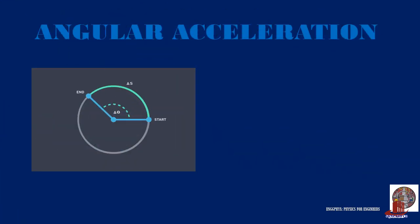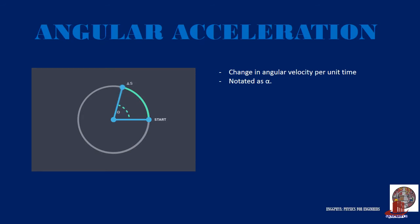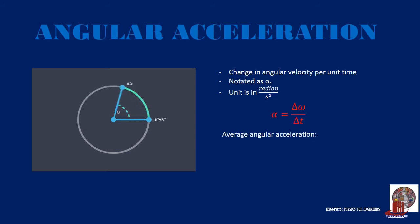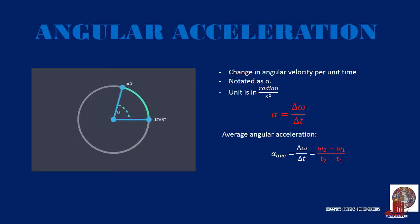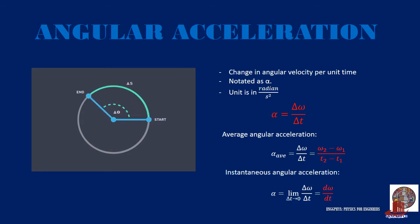With velocity, there would also be acceleration. Angular acceleration is the change in angular velocity per unit time, noted as alpha with units of radians per square second. For average angular acceleration, the formula considers the relative values: change in omega over change in time, or final omega minus initial omega, all over final time minus initial time. With calculus, instantaneous angular acceleration is the derivative of omega with respect to time, d omega over dt.